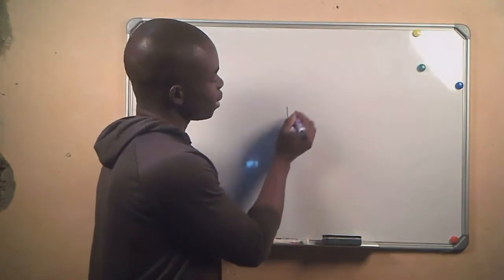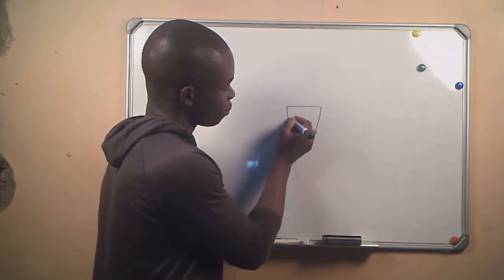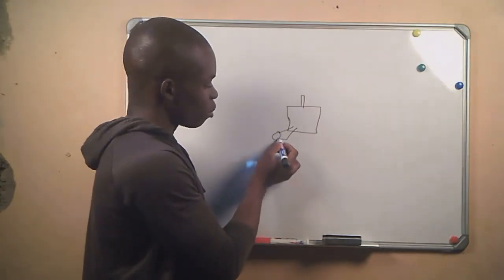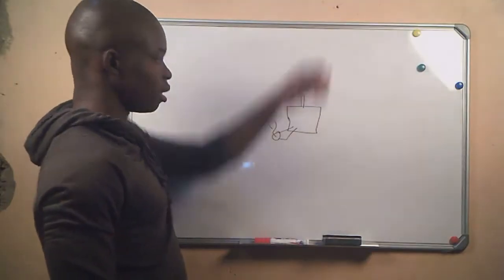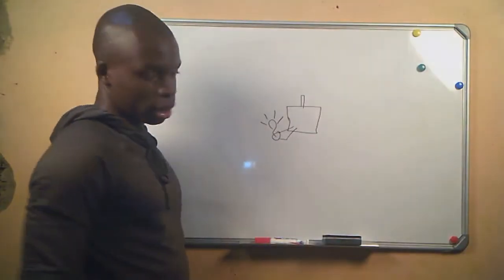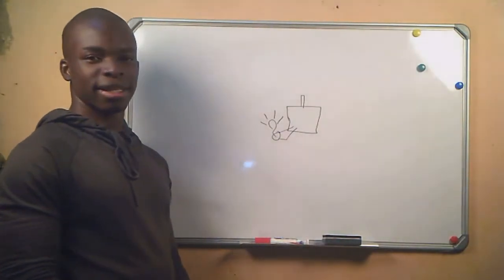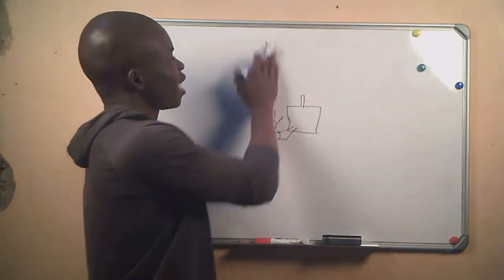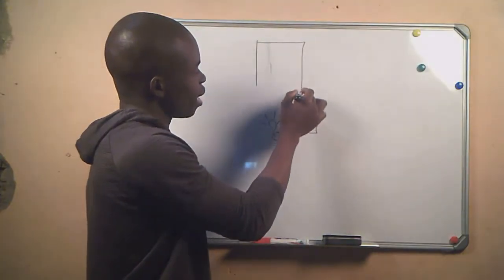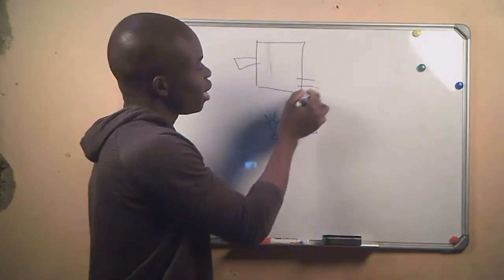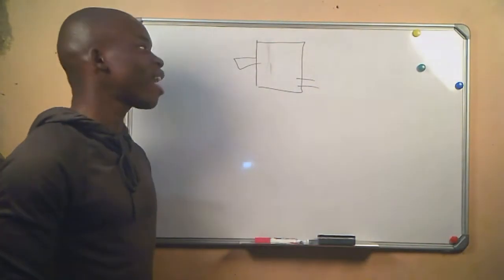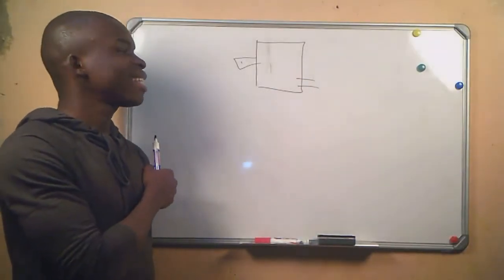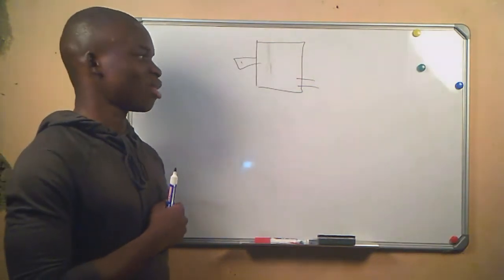Most of us have once seen an experiment where we have a generator, and at the end of the generator there is a light bulb connected. As we spin the shaft of the generator, the light goes on — that's basically how electricity is created. We know that a generator can help us in the creation of energy. Our next job is to find a machine or device that will spin this shaft, but it has to be a machine that doesn't use electricity because we are trying to generate electricity.